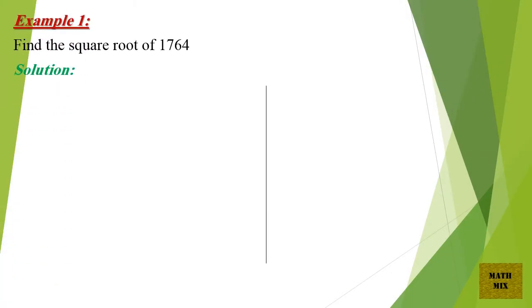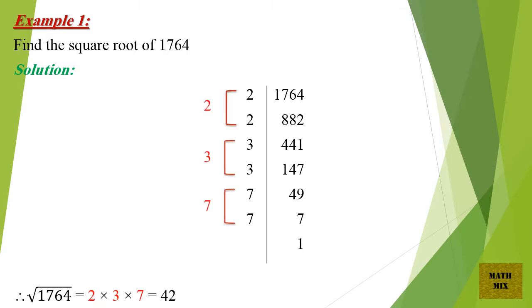Example 1: Find the square root of 1764. Solution: Therefore, the square root of 1764 equals 2 times 3 times 7, which equals 42.